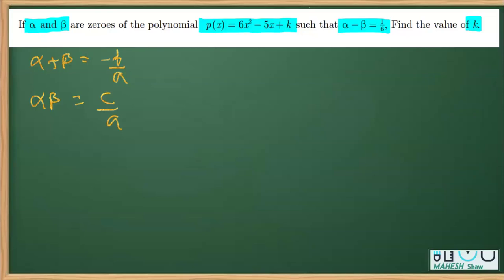Using this relation, the sum of the zeros, alpha plus beta, equals minus b. As you can see, b is minus 5, so minus of minus 5 by 6. This is 5/6.